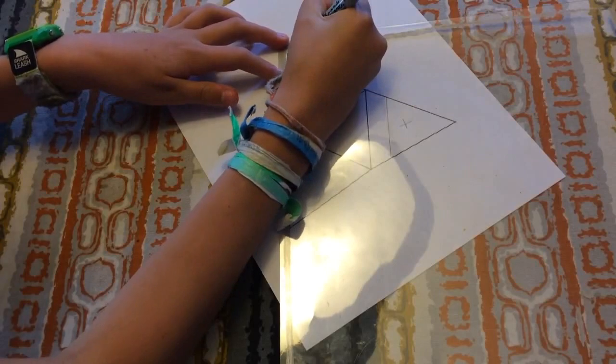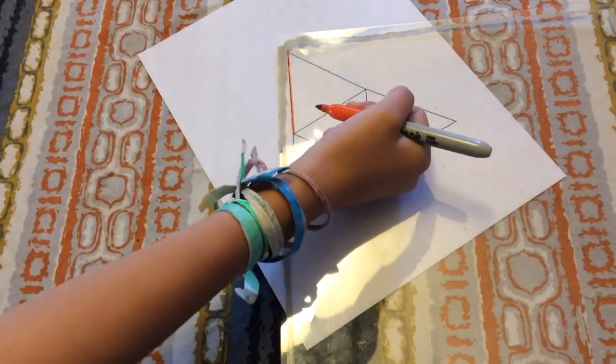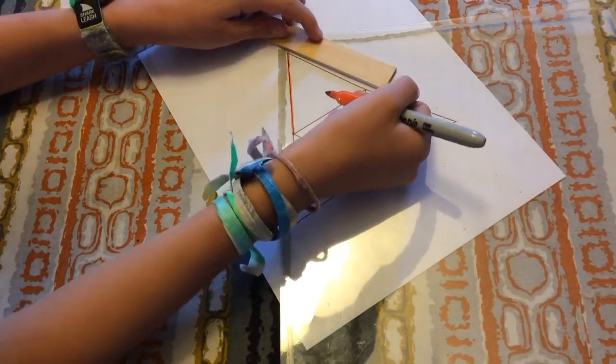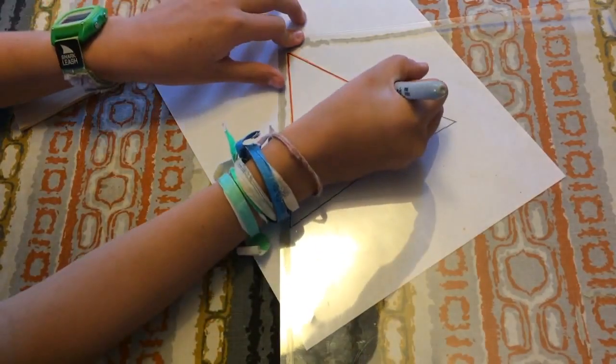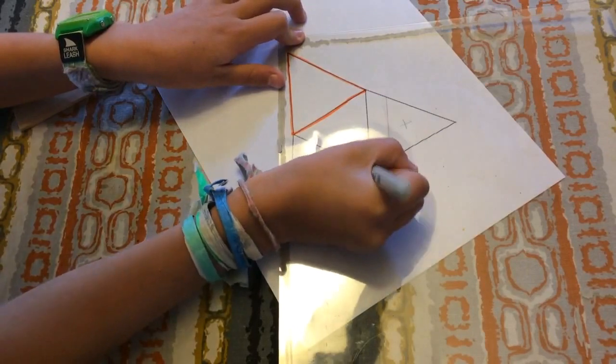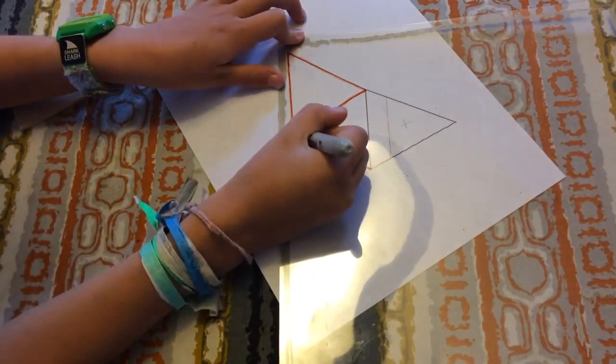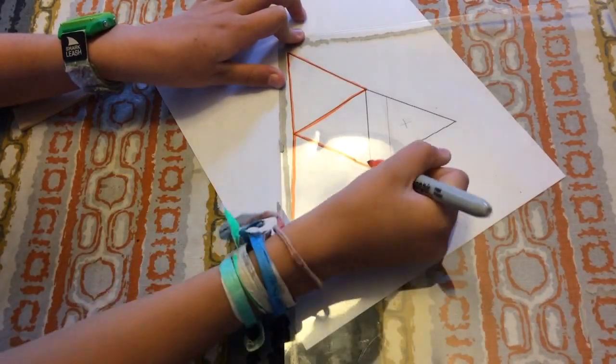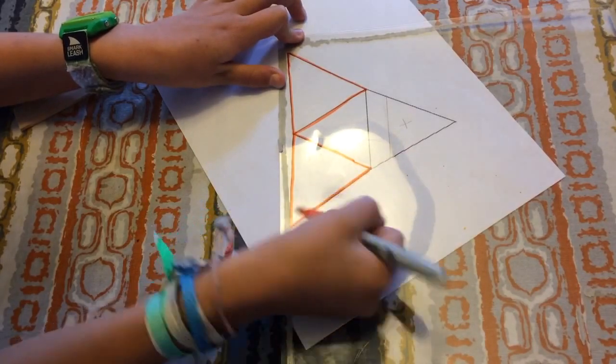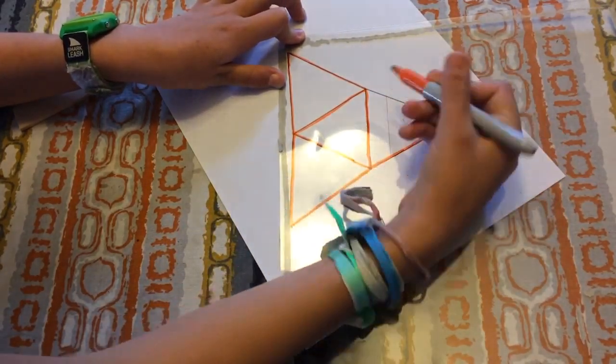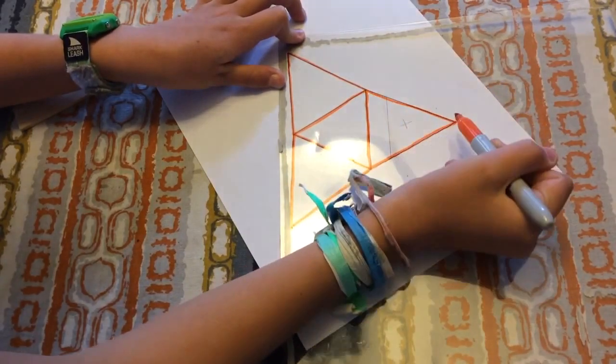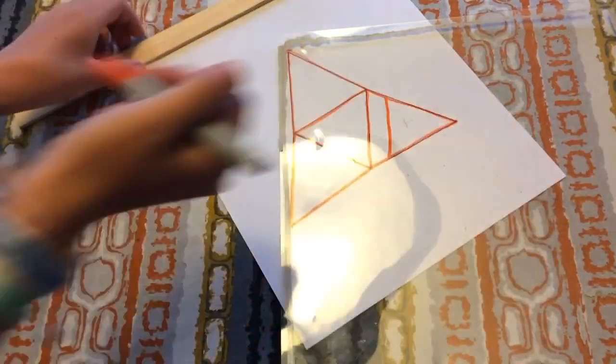So then you just trace the pyramid template onto the plastic. The plastic is from like a box that had plastic on it, but you can use a picture frame from the dollar store or anything you have around your house. Just make sure to use plastic.